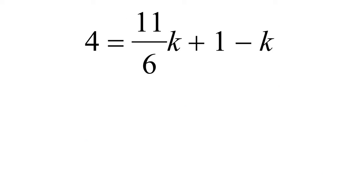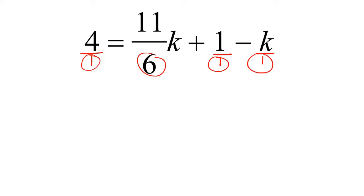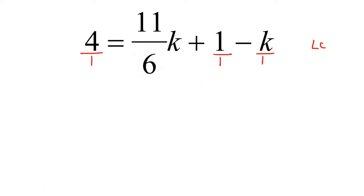Here's another example. We know this is a fraction equation because there's a number at the bottom. So we put all terms with a denominator — if there's nothing, just use a 1. Now look at the numbers at the bottom and find the lowest common denominator, which could just be 6. By the way, 11 over 6 times K can also be written as 11K over 6.